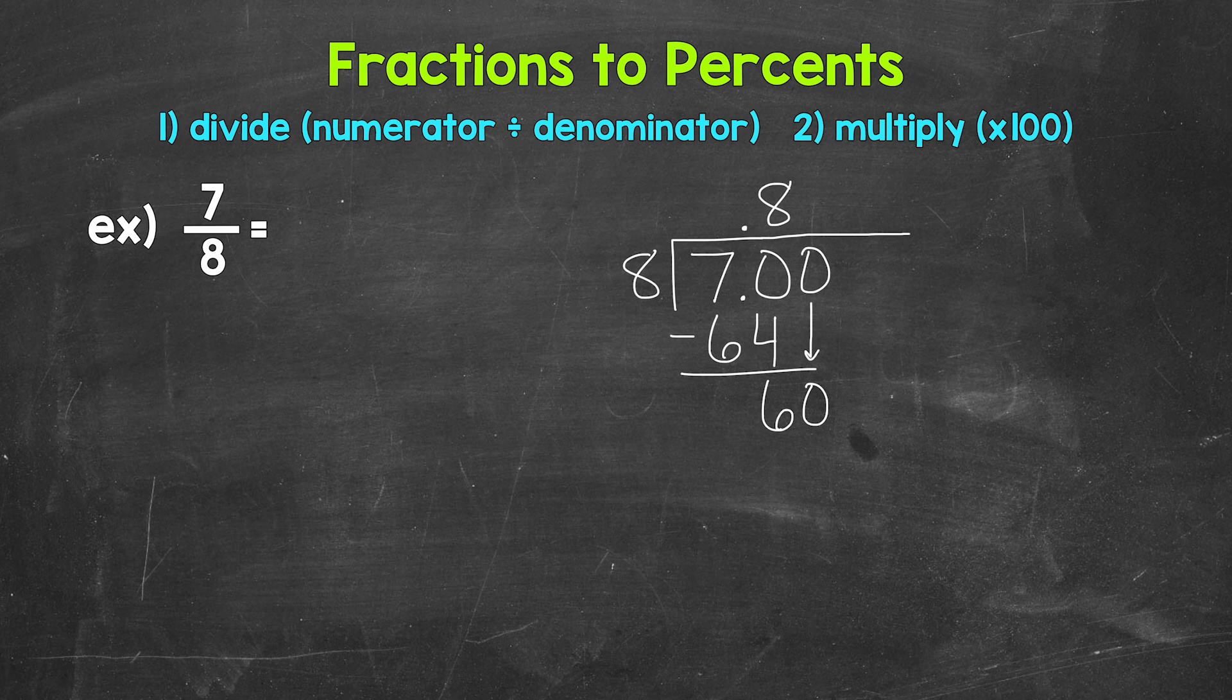And now we have 60, 60 divided by 8. That's going to be 7. That gets us to 56. So we put 7 up top there. Now we multiply 7 times 8, 56, subtract 60 minus 56 is 4.